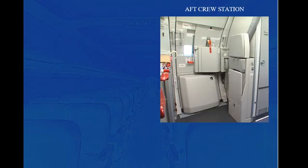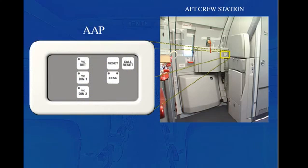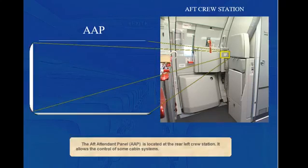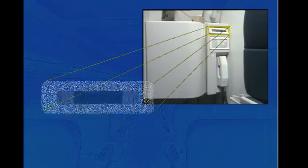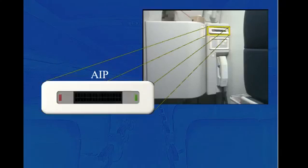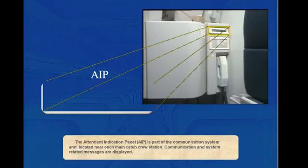The After Attendant Panel, AAP, is located at the rear left crew station. It allows the control of some cabin systems. The Attendant Indication Panel, AIP, is part of the communication system and located near each main cabin crew station. Communication and system-related messages are displayed.